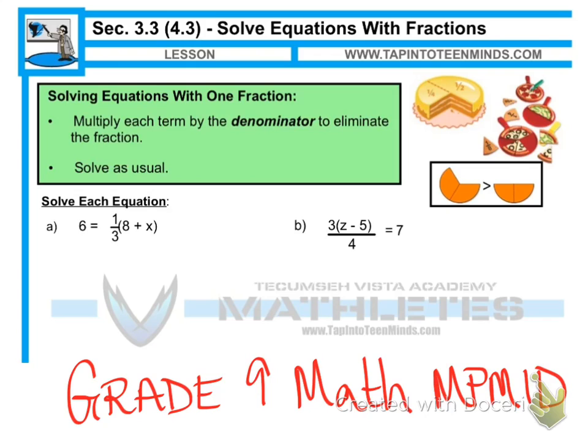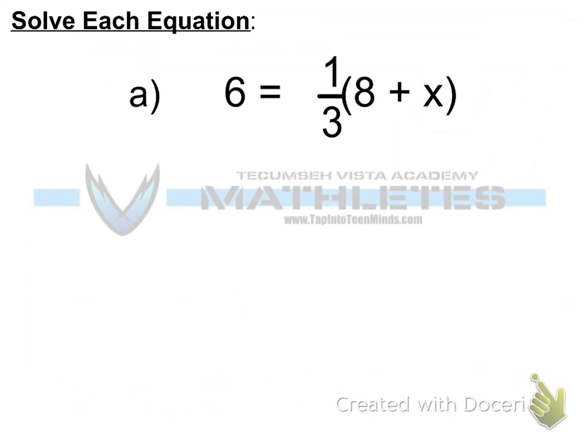So what we want to do is essentially triple both sides so that the equation is still equal, however, we eliminate the fraction. So let's take a closer look. So for part A here, we do see we have a denominator of 3, the idea being that we have one-third of that bracket. So let's go ahead and let's triple the value on the right side.